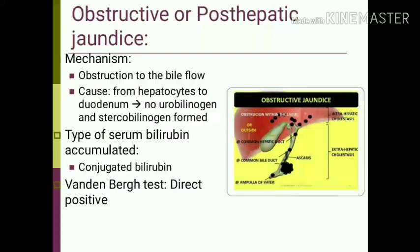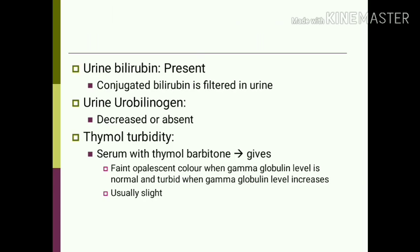In obstructive or post-hepatic jaundice, the mechanism is obstruction to bile flow from the hepatocytes to the duodenum, due to any cause. Therefore, no urobilinogen or stercobilinogen is formed. The type of serum bilirubin accumulated is conjugated bilirubin due to impaired flow, and the Van den Berg test is direct positive. Urine bilirubin is present as conjugated bilirubin is filtered and excreted in urine. Urine urobilinogen is decreased or absent because conjugated bilirubin is not released into the intestine.